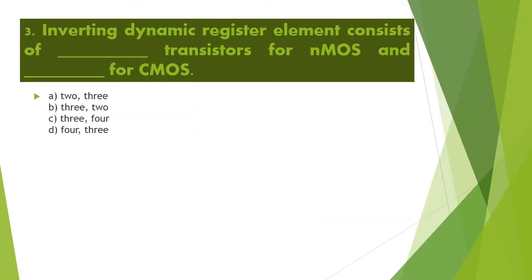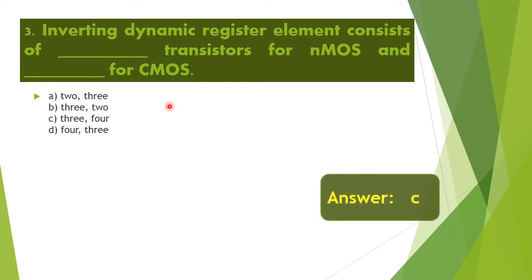Next question: Inverting dynamic register element consists of how many transistors for NMOS and CMOS? It consists of 3 transistors for NMOS and 4 for CMOS. Option C is the right answer.